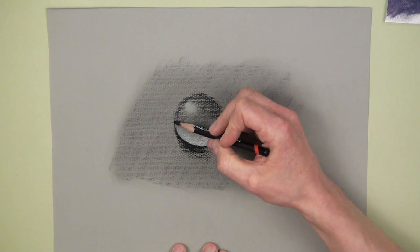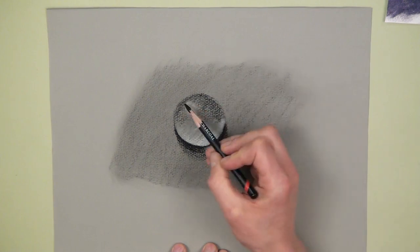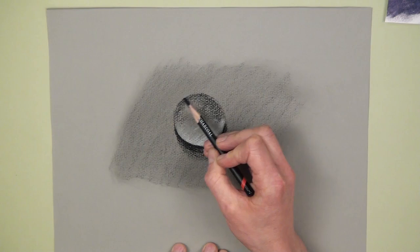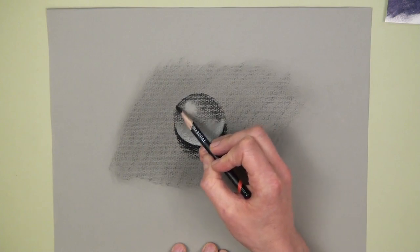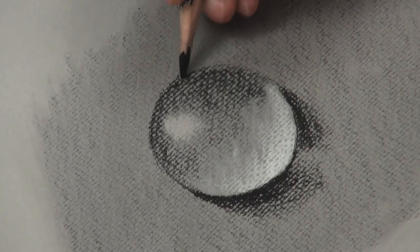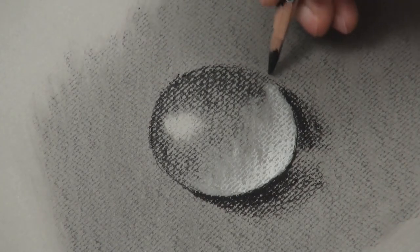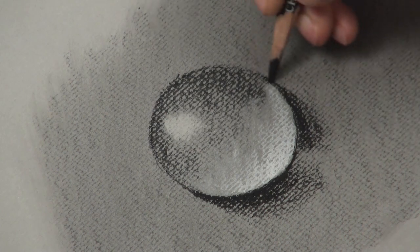Okay, and then this top edge, just the thinnest of—I don't want to outline it too much but you're just going to give it the thinnest of dark edges just to create some strong definition. Go a bit further around there.